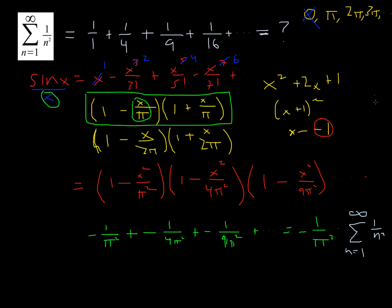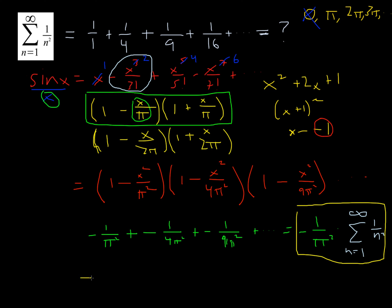If we look back at our Taylor series polynomial of sine of x over x, the coefficient of the x squared term is negative 1 over 3 factorial. So this means that negative 1 over pi squared times the infinite series of 1 over n squared equals negative 1 over 3 factorial by the transitive property — they are both the coefficients of the x squared term.